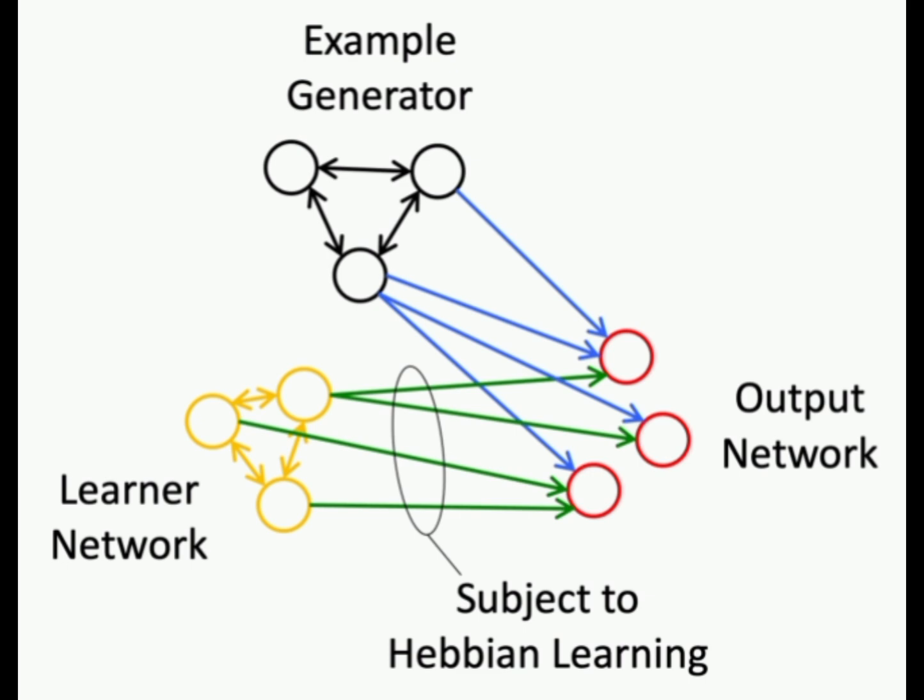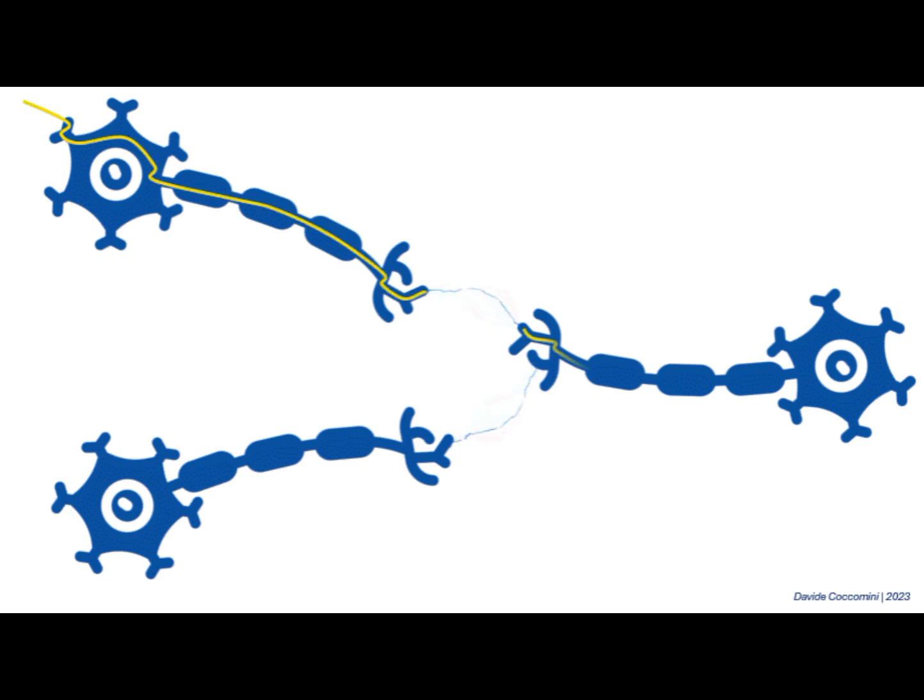As learning takes place, simultaneous or repeated activations of weakly connected neurons change into a strong connection in the neural network. If two neurons present on two sides of a connection are activated synchronously, the strength increases. When they are not synchronized, the strength decreases.